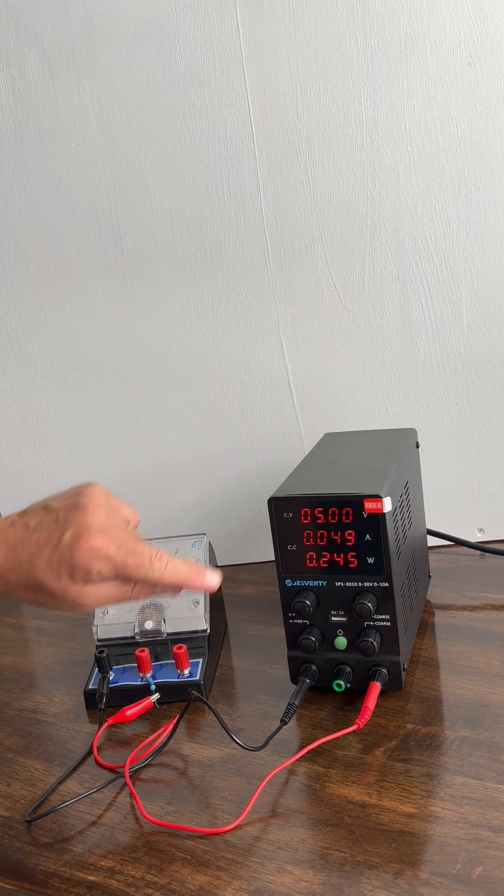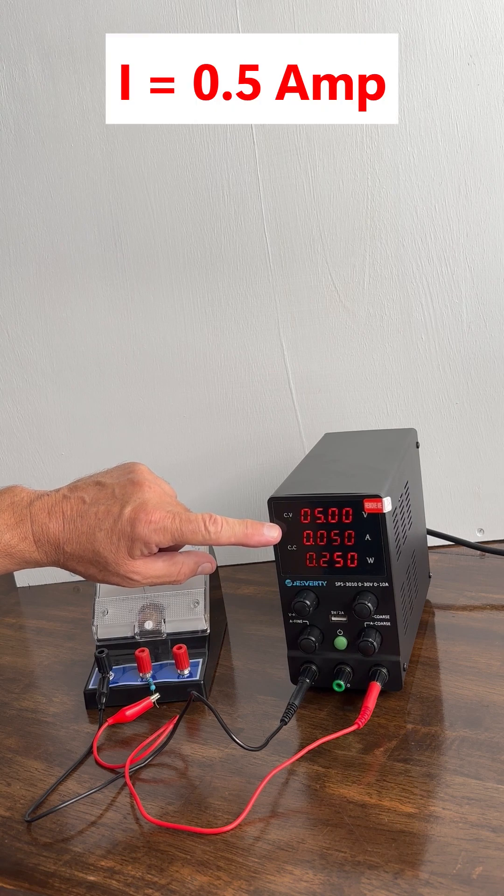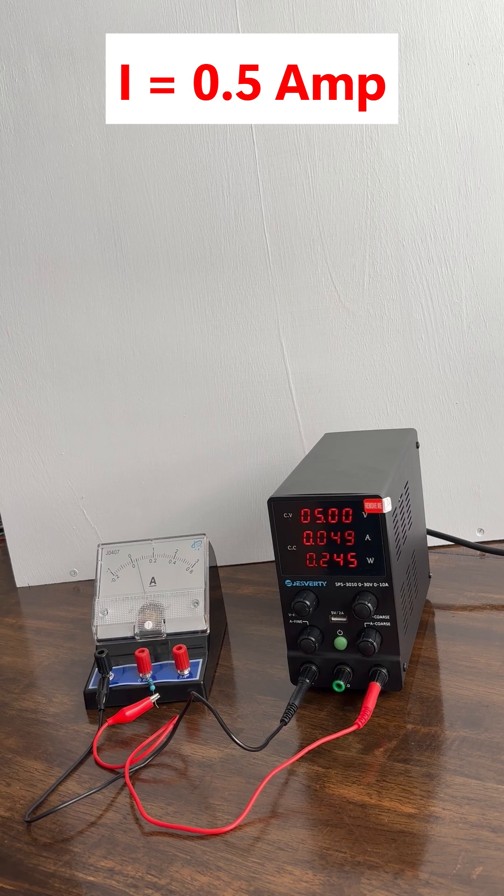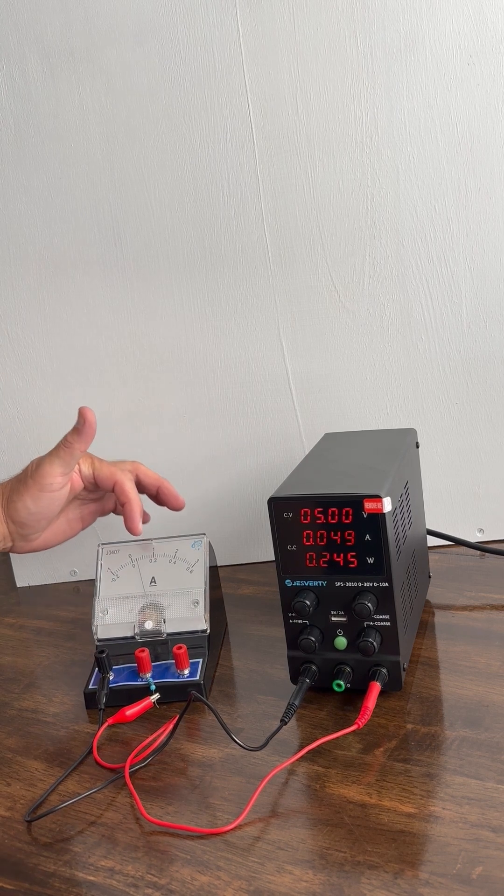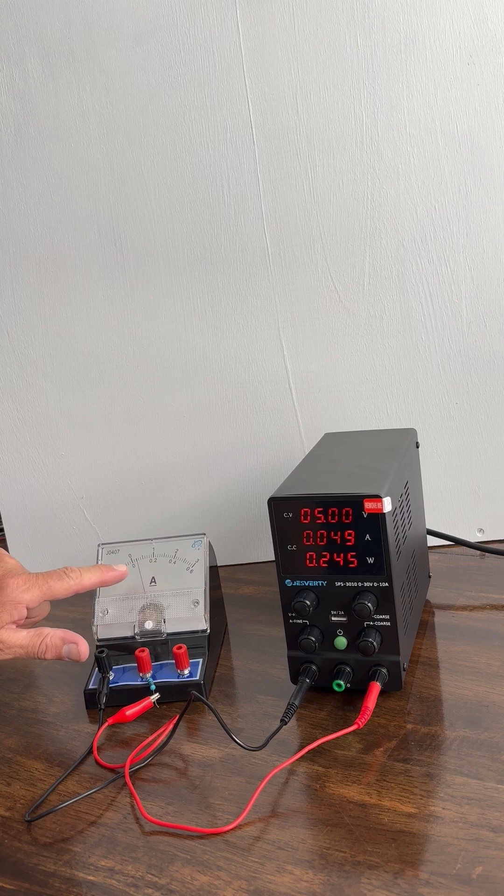Okay, so let's see what the power supply is telling us. We're delivering 0.05 of an amp. And the current meter over here is telling us basically the same thing, because the bottom scale goes from 0 to 0.2, so that's 0.1.